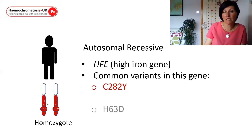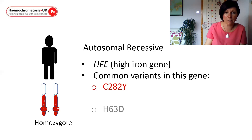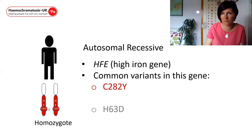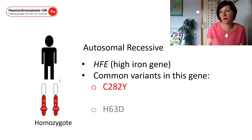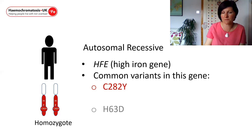When a patient inherits two copies of C282Y — as you can see on the slide, both copies of the gene carry that variant — they're referred to as a homozygote, because they've got two copies of the same variant. This means the person now doesn't have a functioning copy of the gene, and therefore this patient is at a high risk of iron loading when they're an adult.